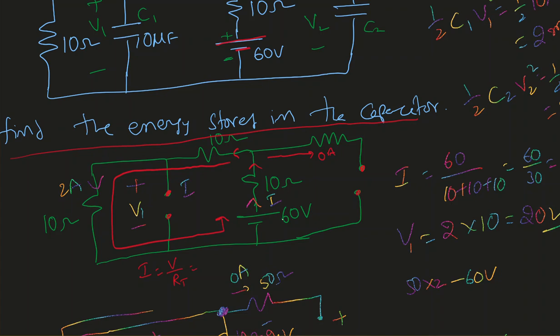Current is going to start flowing here. There won't be any current passing through the capacitor branch because it is an open circuit in that loop. So current is going to flow in this direction and come back to the negative. All I need to do is find that current: I = V / R_total. With 60 volts and R_total = 10 + 10 + 10, that gives 60 divided by 30, which is 2 amperes.